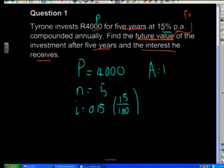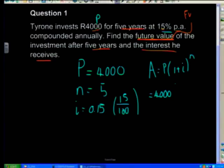We're going to use our compound interest formula: A equals P times (1 + i) to the power of n. So n, your number of years, is an exponent. We simply plug in our initial amount of 4,000, times (1 + i), i being your interest rate of 0.15, and we grow all of that for five years, so n is 5.